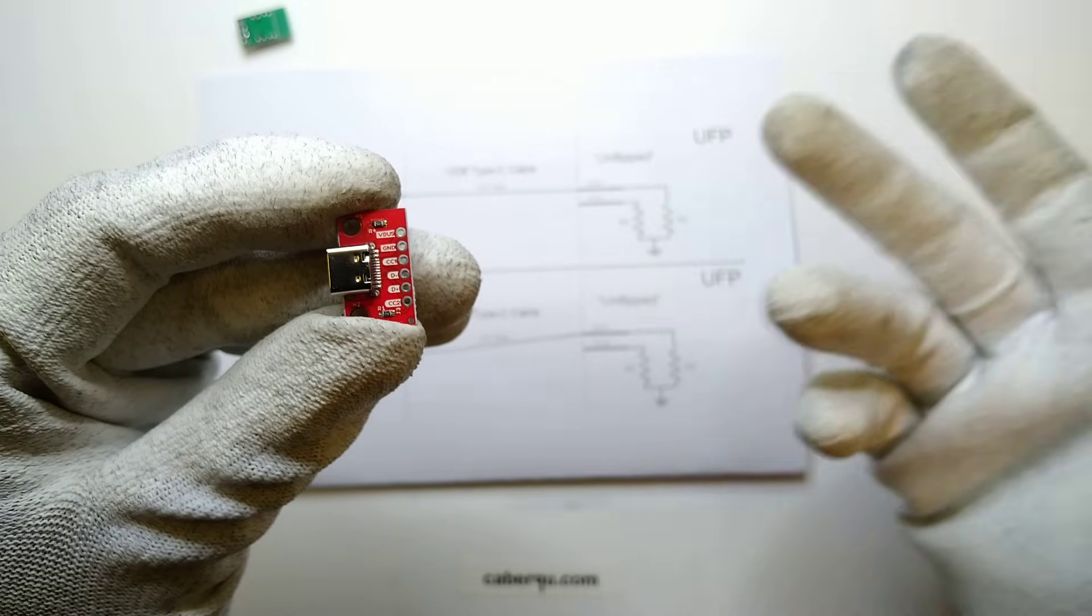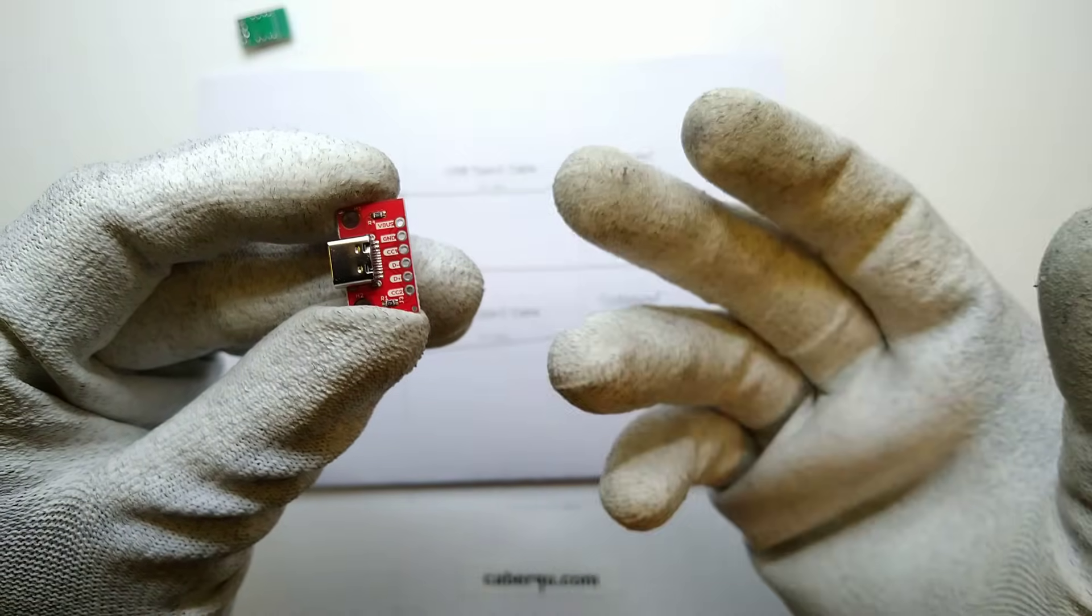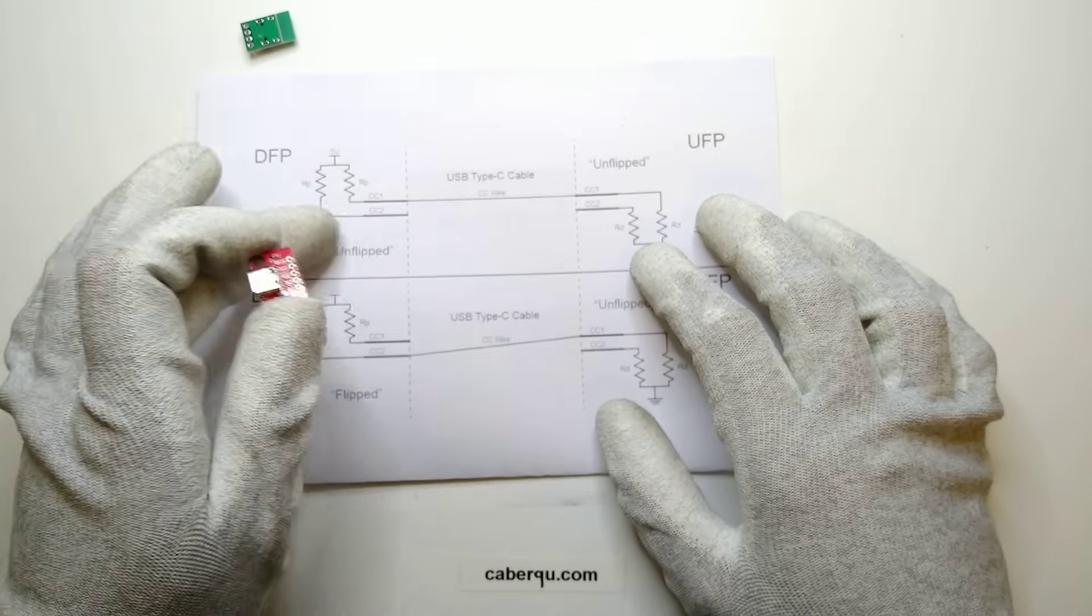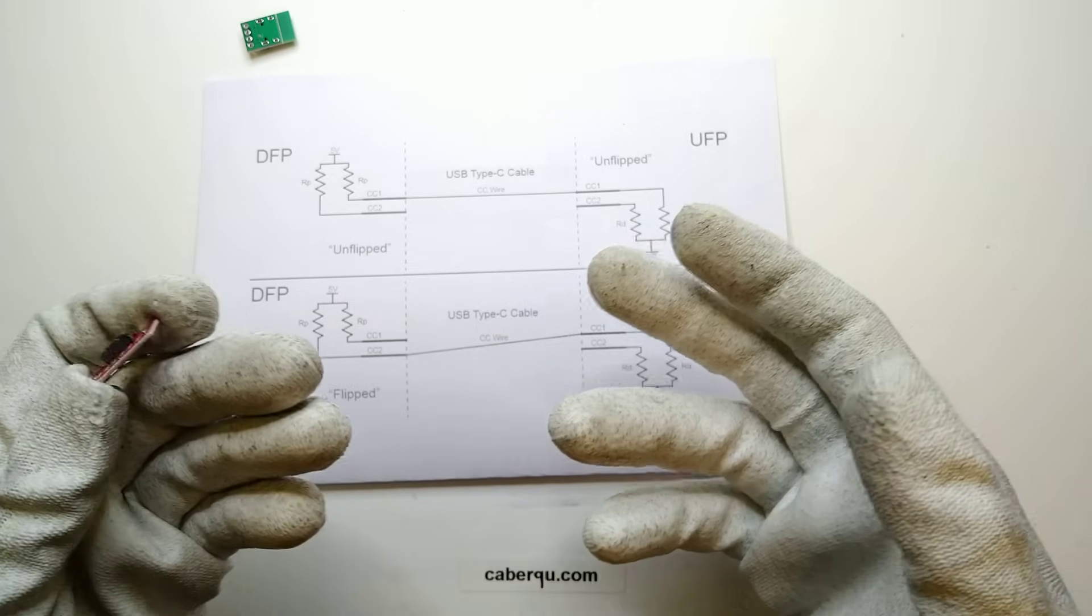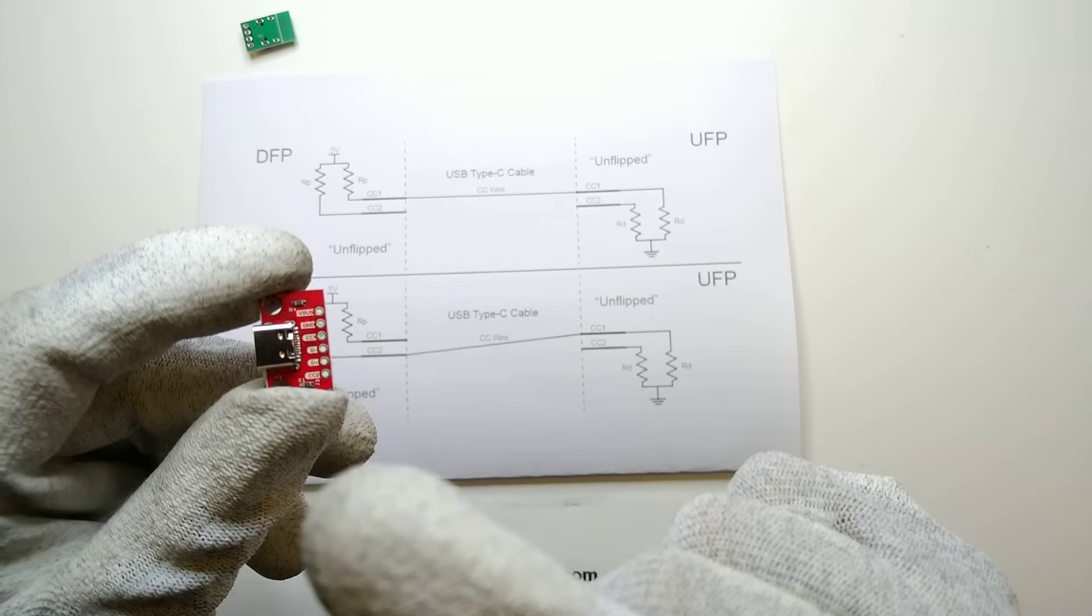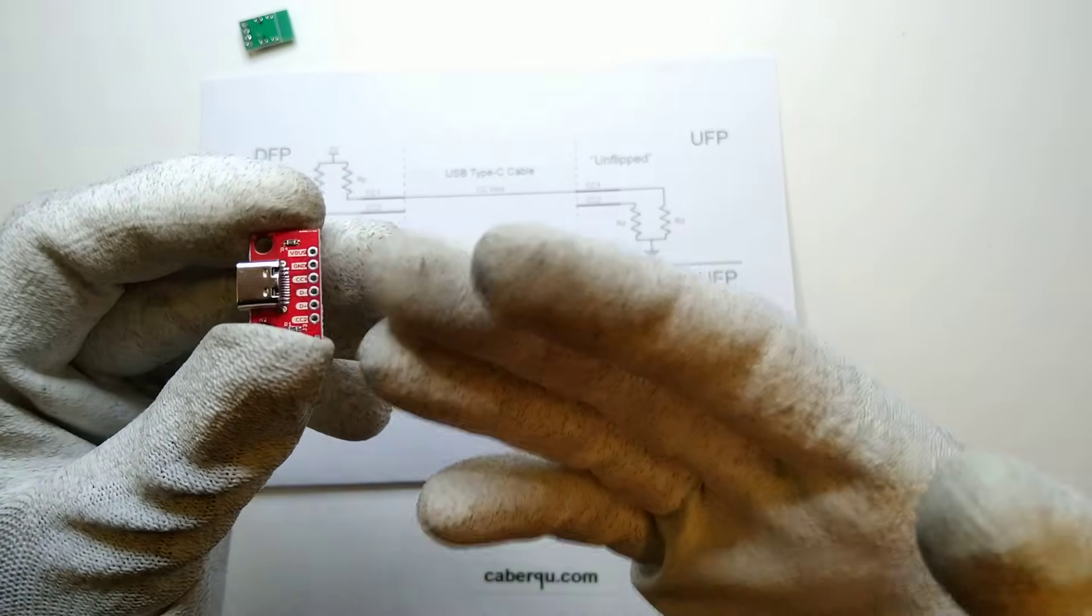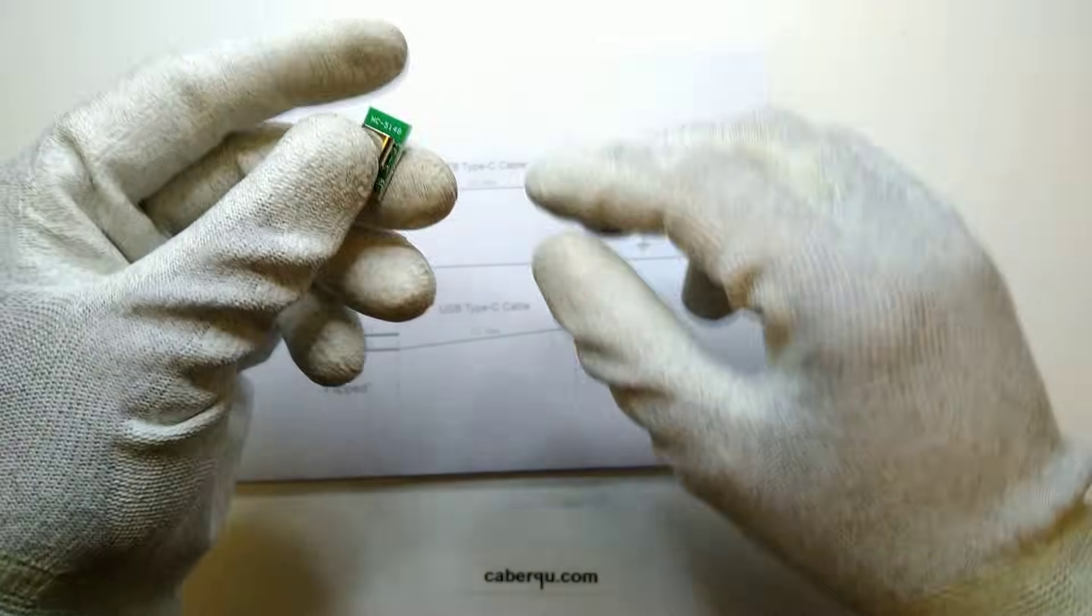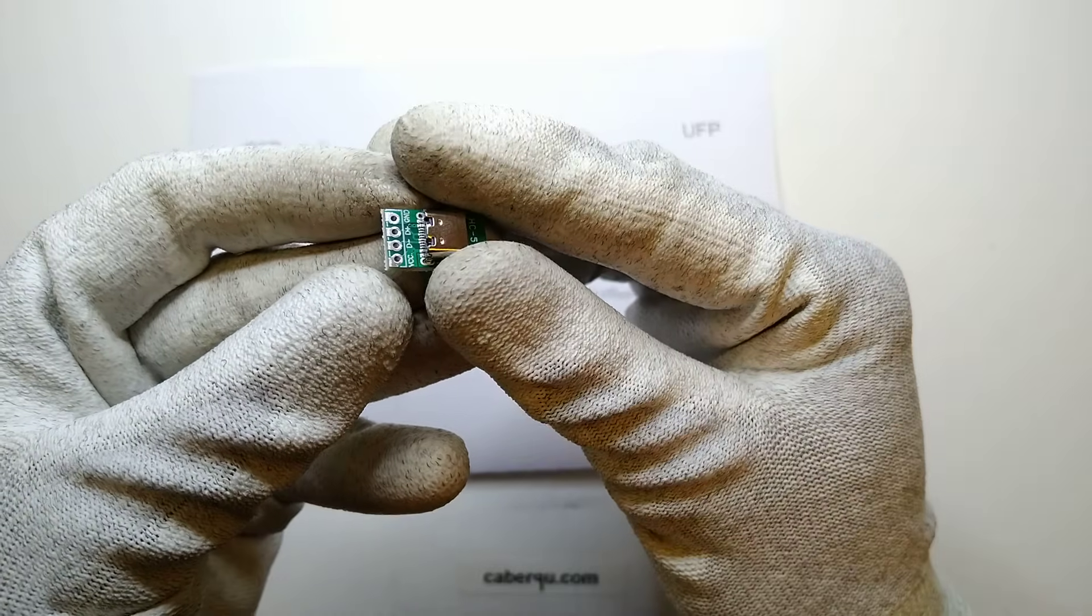And then hook our power delivery compatible IC or our negotiation device to the CC1 and CC2 pin and actively negotiate with our downstream facing ports or charger to request more than 5 volts, for example, to request a higher current or anything else. So this is a good breakout board, this gives us the flexibility to do whatever we'd like. With this board, on the other hand, like I said, we are not having any access to the CC pins and they are not pulled down.